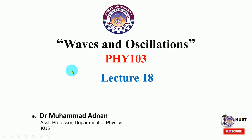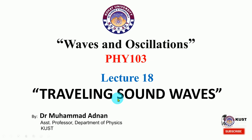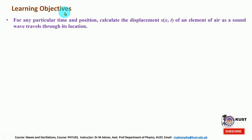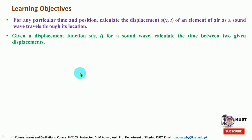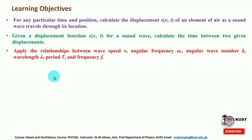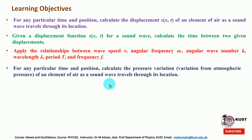First, I will give the learning objectives. At the end of this presentation, the student will be able to calculate the displacement of an element of the air as sound waves travel through its location at any particular time and position. They will also be able to apply the displacement function s for sound waves and calculate the time between two displacement elements. They will also be able to apply the relationship between sound speed, angular frequency, angular wave number, wavelength, time period, and frequency to calculate any of these parameters.